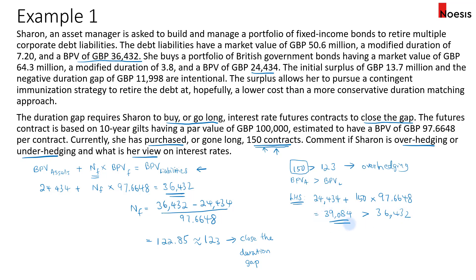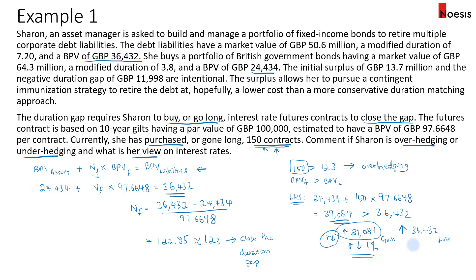The reason why you want the BPV of the asset and the derivative to be higher is because you think that interest rates are going to fall. For example, if interest rates were to drop by 1%, the value of the asset will increase by £39,084, which is a gain. On the liability side, the liability value will increase by £36,432, which is a loss. But the gain from the asset is greater than the loss from the liability appreciation, so net this will be a gain. The only reason why Sharon would overhedge and buy more than what is needed is because her view is that interest rates are going to fall.